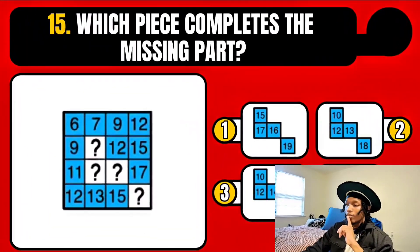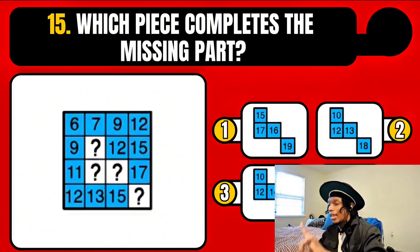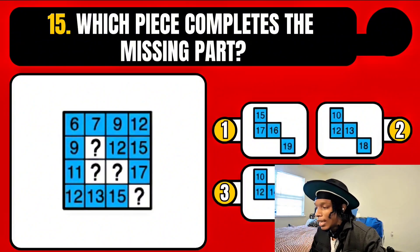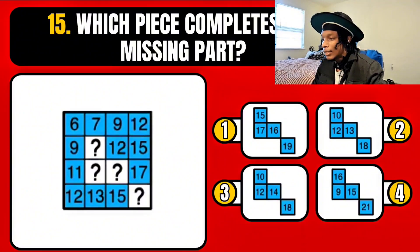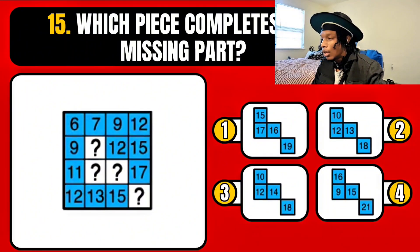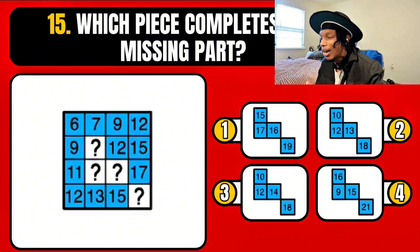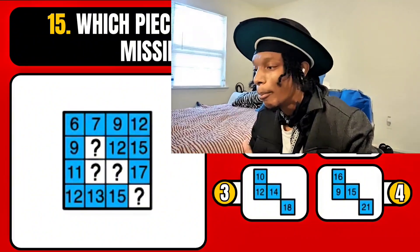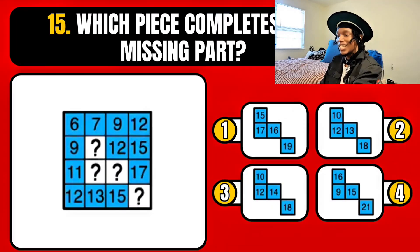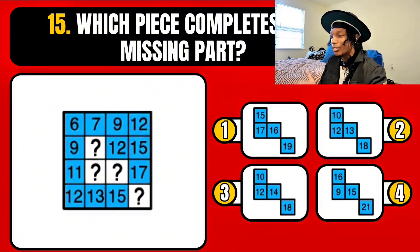Which piece completes the missing part? Piece 1... Piece 3. Or piece 4. It is quite obvious that the missing part would be number 4, because the 16 is missing from the equation. I do not have to pause to get this one.